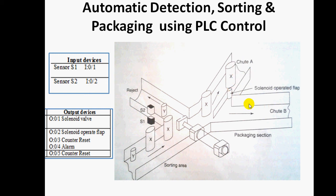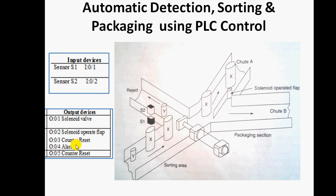For inputs and outputs: there are two inputs — S1 identifies X components and S2 identifies Y components. There are four outputs: output O0/1 is solenoid valve one, then the solenoid-operated flap, counter reset, and an alarm. The alarm activates after the counting process is completed.